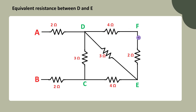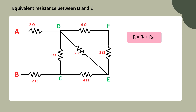Now let's look at how the current flows through the 4 ohm and 2 ohm resistors. Since the same current flows through both, they are connected in series. To find the equivalent resistance of resistors in series, simply add their values together. Substituting the values, 4 ohms plus 2 ohms equals 6 ohms.